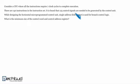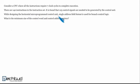It is found that 125 control signals are needed to be generated by the control unit while designing the horizontal microprogrammed control unit. Single address field format is used for branch control logic. What is the minimum size of the control word and control address register?